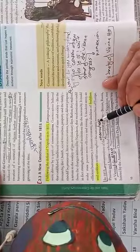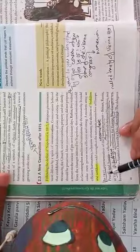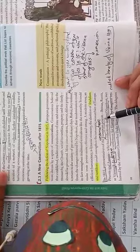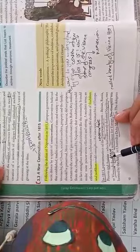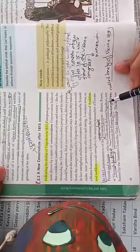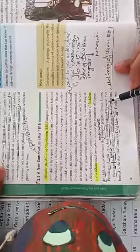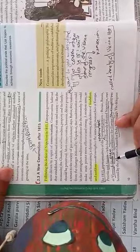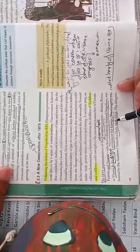In 1815, representatives of the European powers - European powers ke representatives, jo pratinidhitva, pratinidhi the, jaise Britain, Russia, Prussia and Austria - who had collectively defeated Napoleon, jinon ne milkar, collectively milkar, unified fashion mein Napoleon ko haraya tha - met at Vienna to draw up a settlement for Europe. Vienna mein ye mile the kya? To draw up a settlement for Europe - Europe ke liye ek settlement, ek samjhauta lane ke liye.